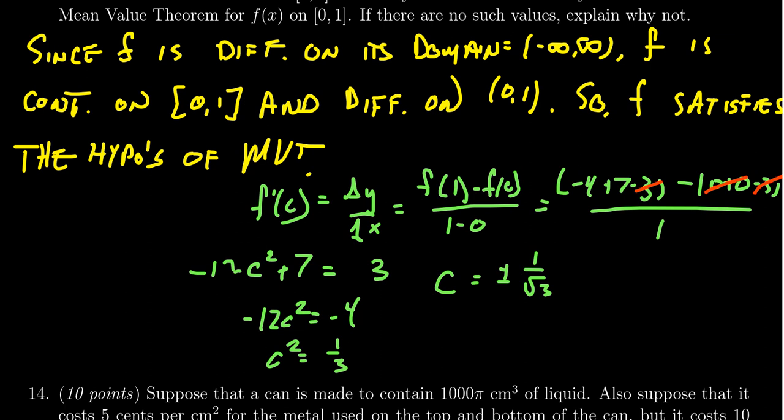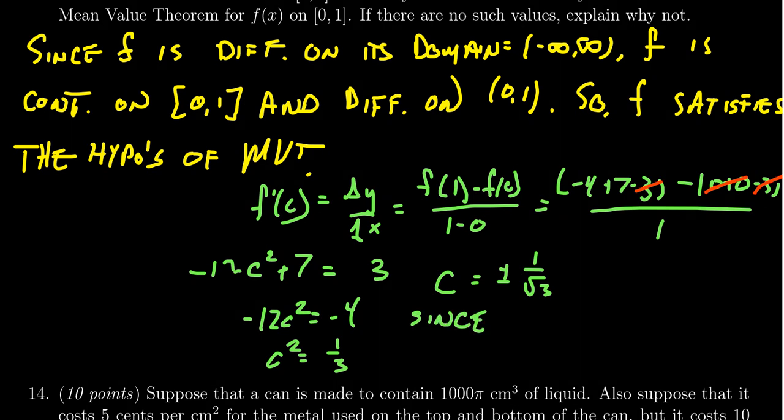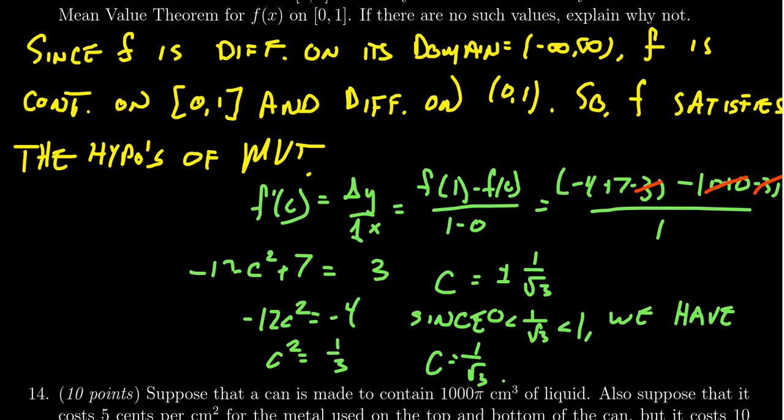So we can conclude something like: since 1/√3 is less than 1 but greater than 0, we have that c = 1/√3. This was the value guaranteed by the mean value theorem. This therefore answers the question presented.